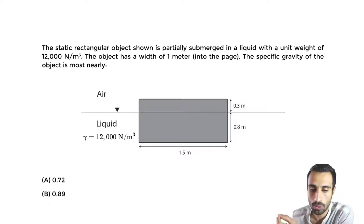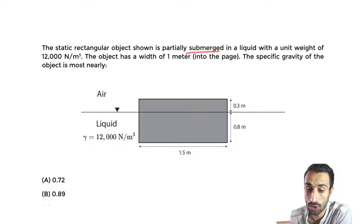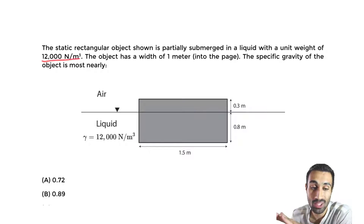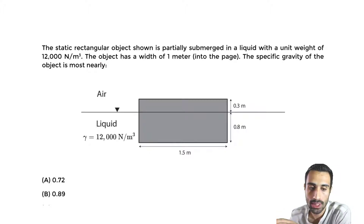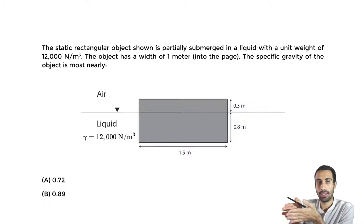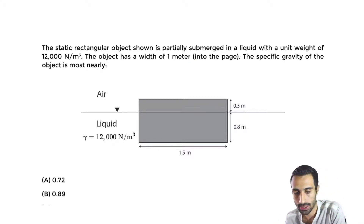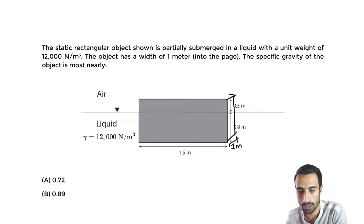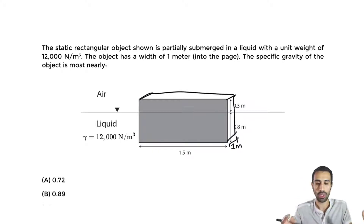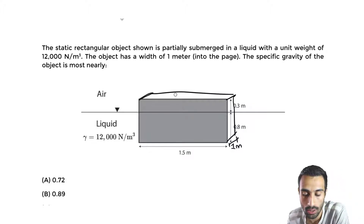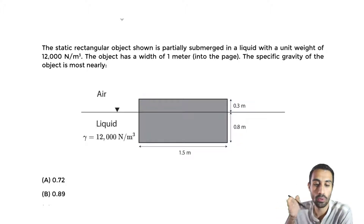We're told a static rectangular object shown is partially submerged in a liquid with a unit weight of 12,000 newton per cubic meter. The object has a width of one meter into the page, so think of it in 3D — it's a three-dimensional object with a width into the page of one meter.